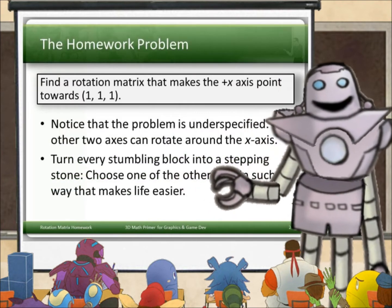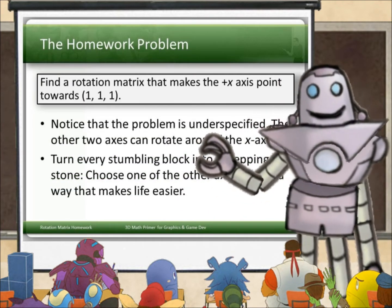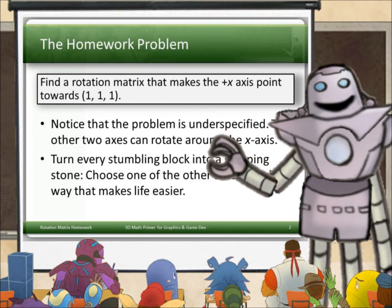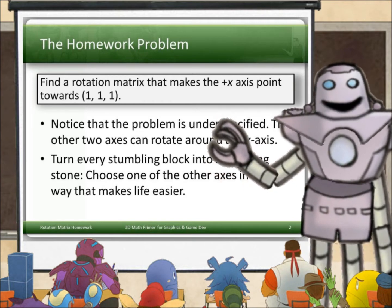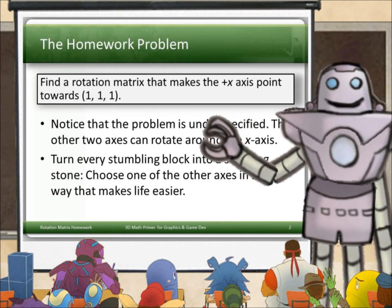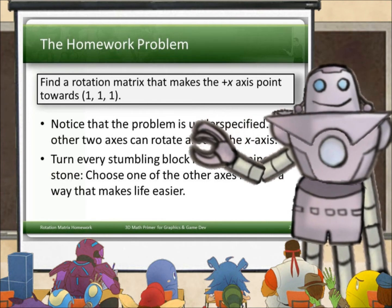The homework problem was this. Find me a rotation matrix that makes the positive x-axis point towards (1, 1, 1).